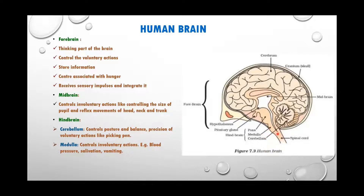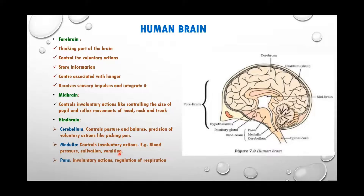The medulla oblongata connects and continues with the spinal cord. It controls involuntary actions like blood pressure, salivation, and vomiting. Salivation — when we smell tasty food — is an involuntary action, and vomiting when allergic food is taken cannot be controlled. Pons also controls involuntary actions like regulation of respiration — inhalation and exhalation. These functions are controlled by our brain.